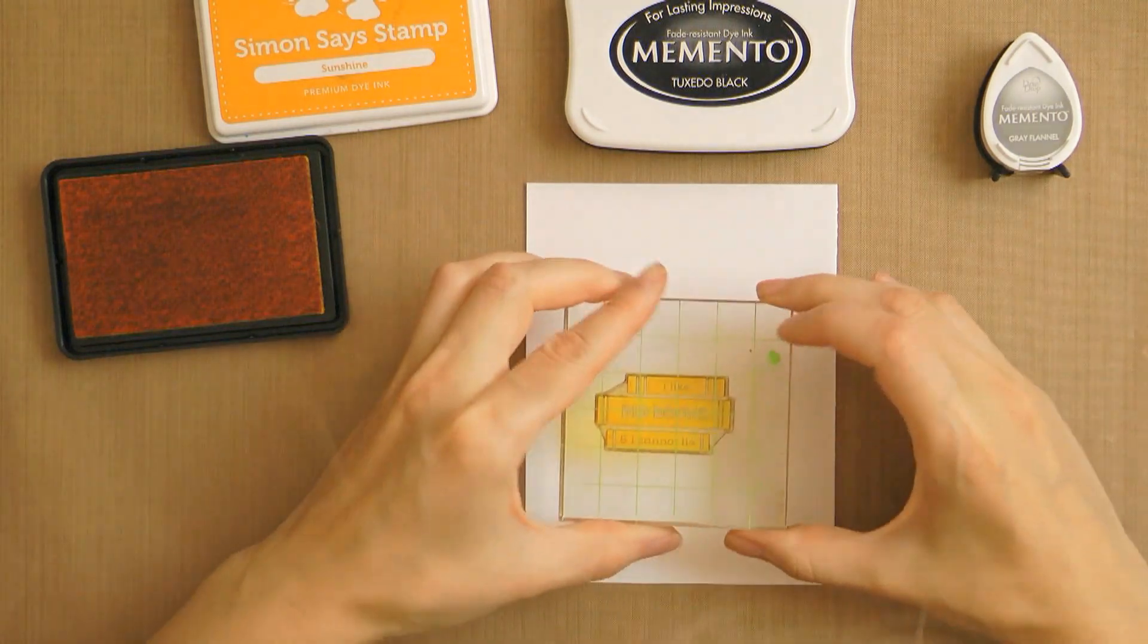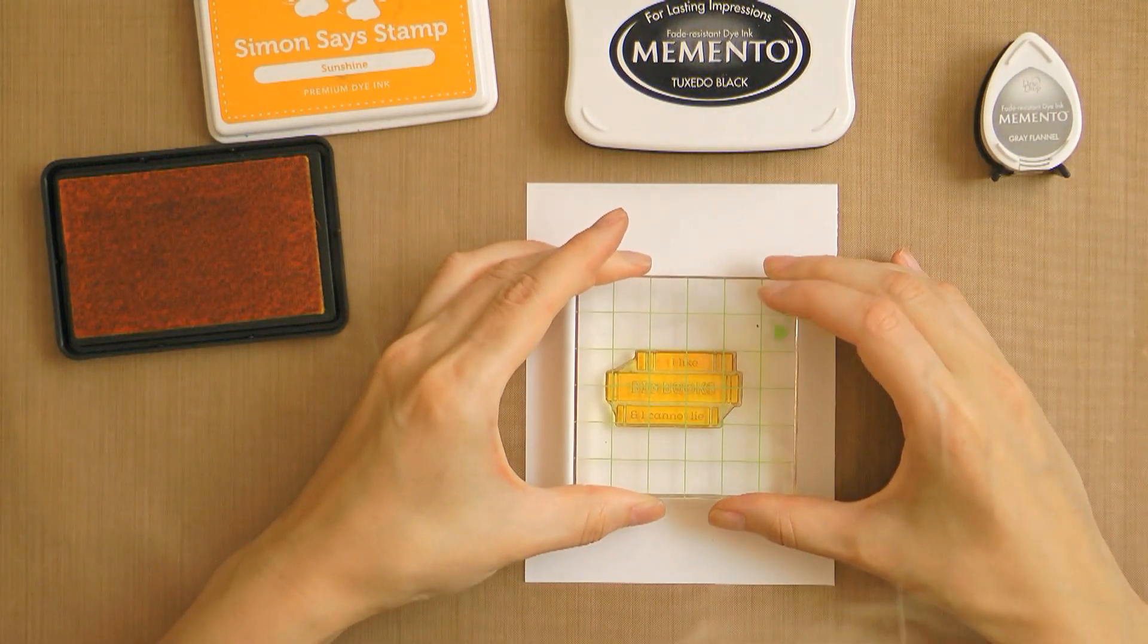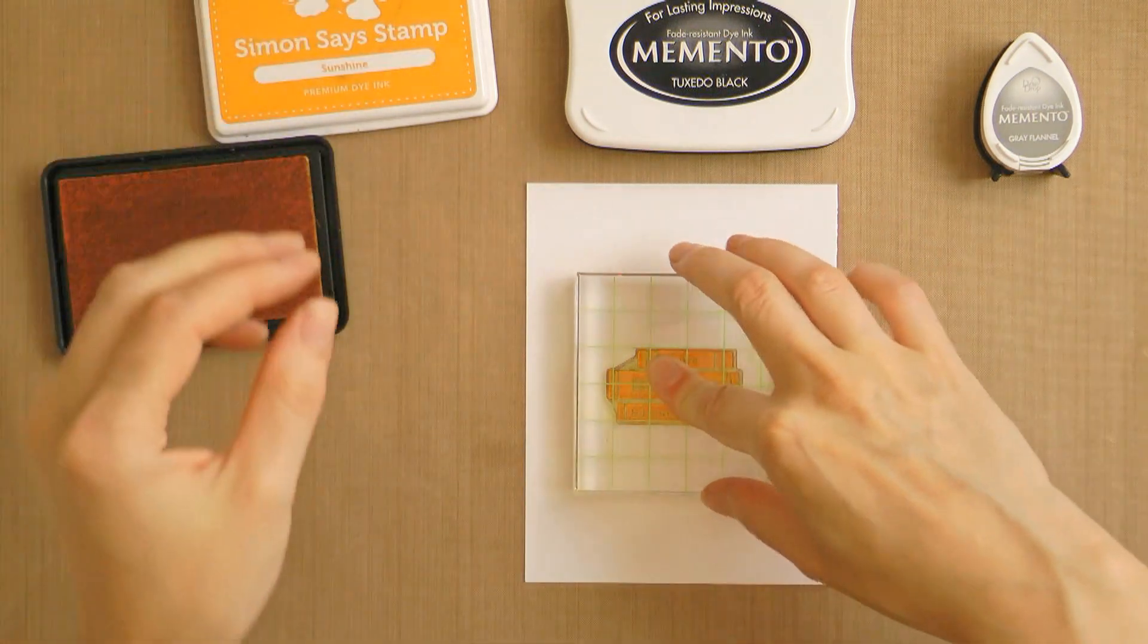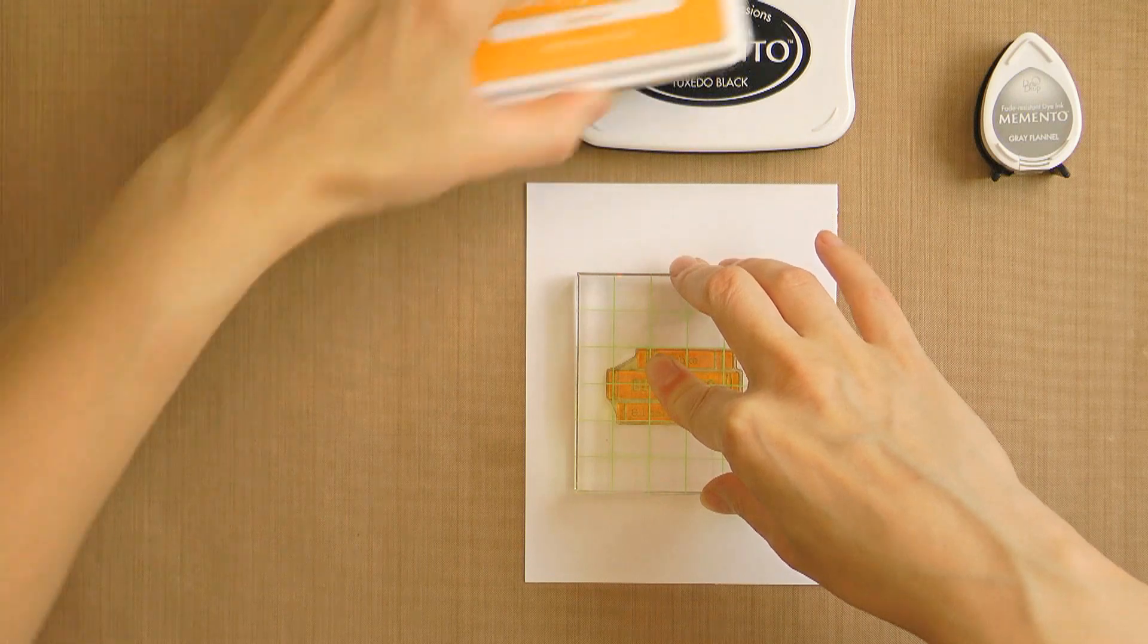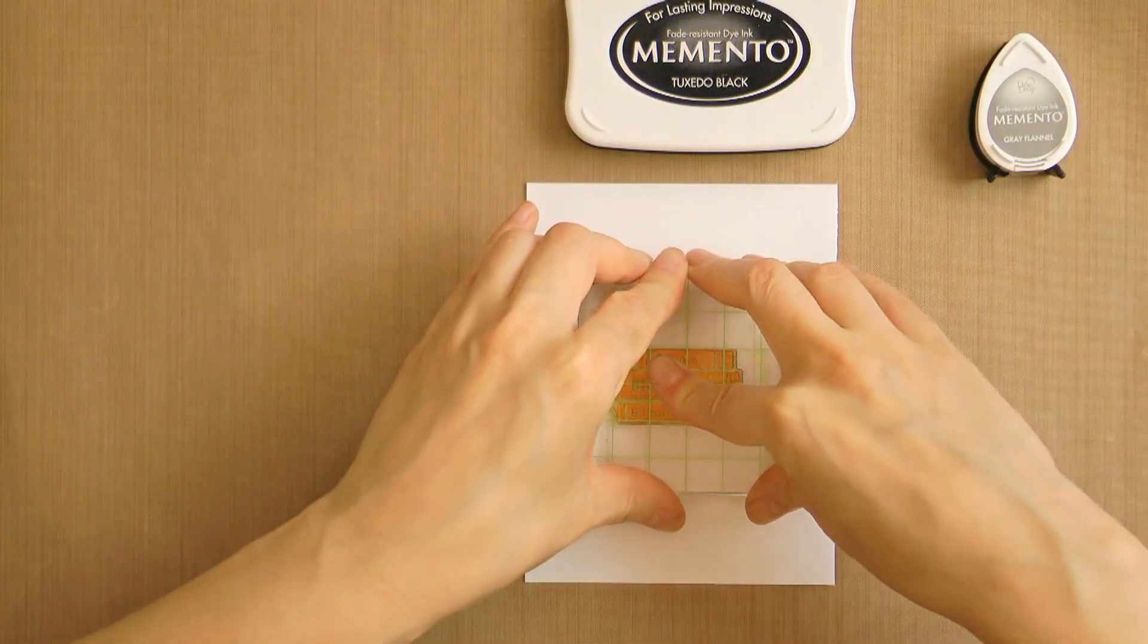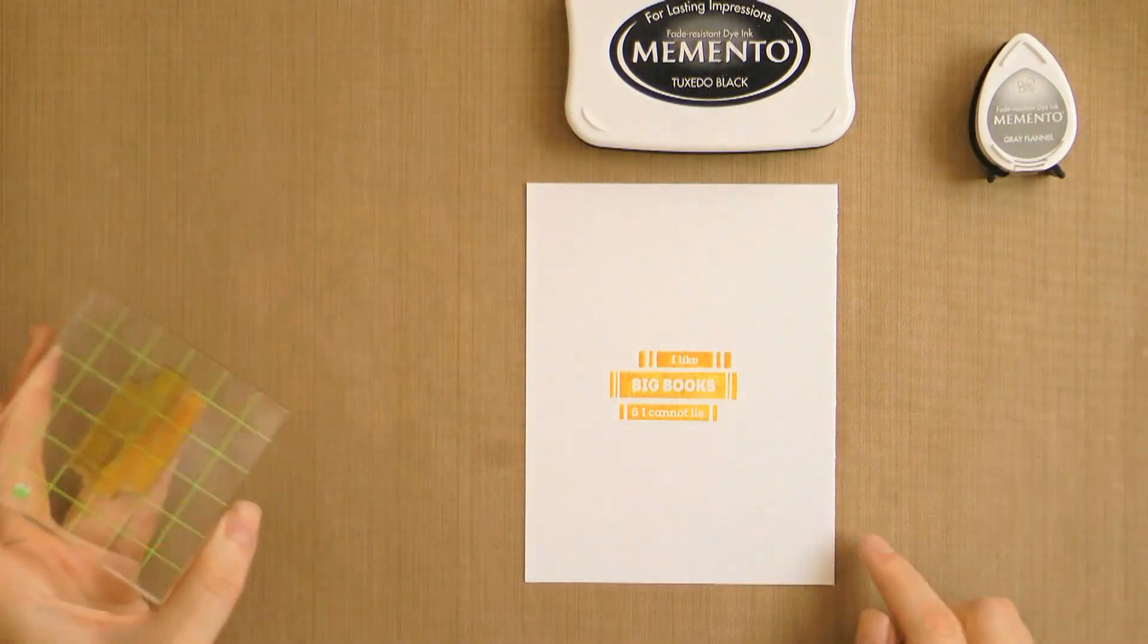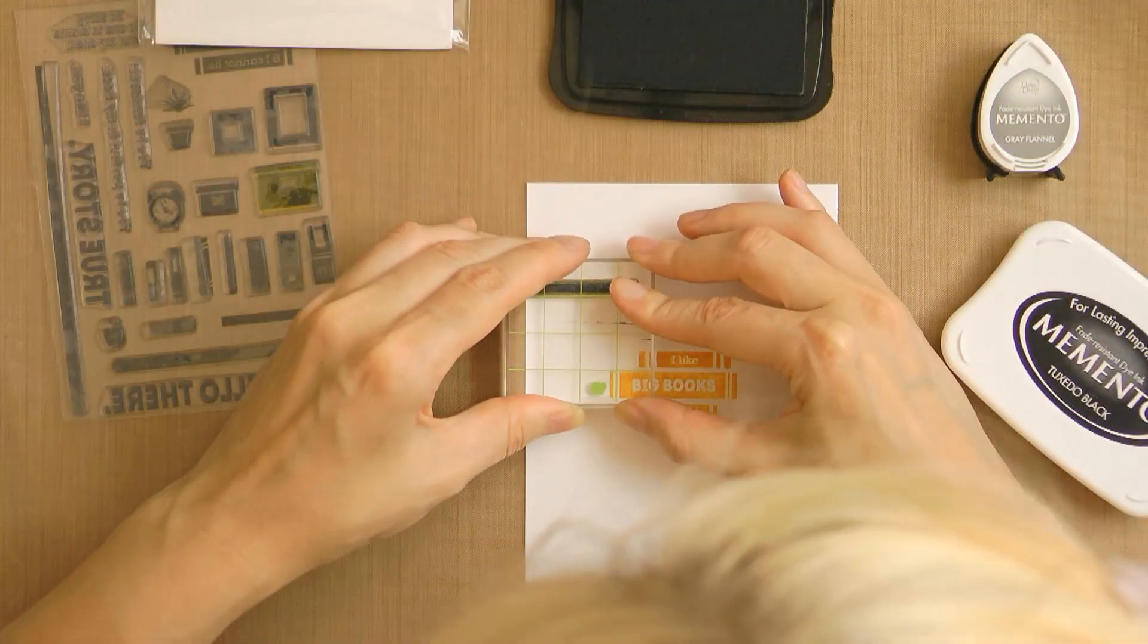First I'm going to stamp the main sentiment on my card - I like big books and I cannot lie - in yellow and I just love it. It's been stuck in my head ever since I first read it on the packaging. So stamping that in sunshine yellow and I'm trying to keep my stamp a bit longer on my paper to help the ink transfer a bit better.